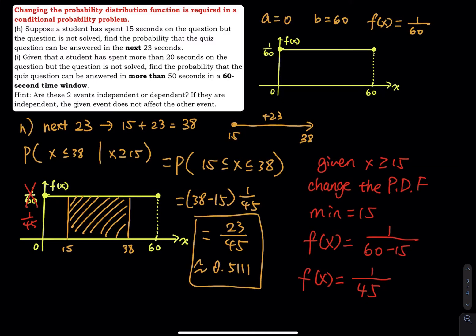Okay. So the next one is, given that the student has spent more than 20 seconds on a question, but the question is not solved, find the probability that the quiz question can be answered in more than 50 seconds, more than 50 seconds.